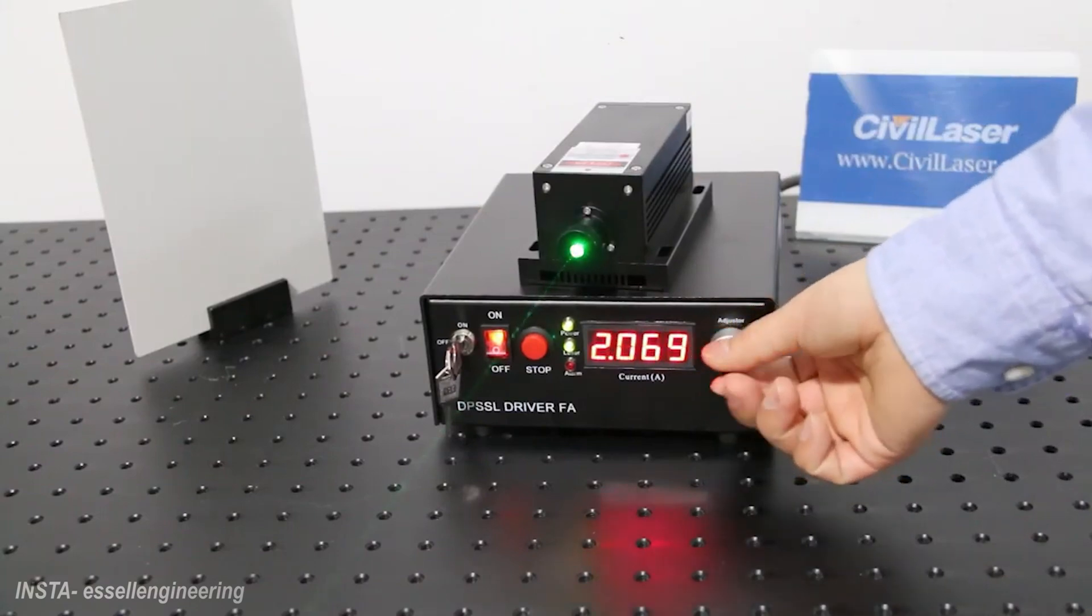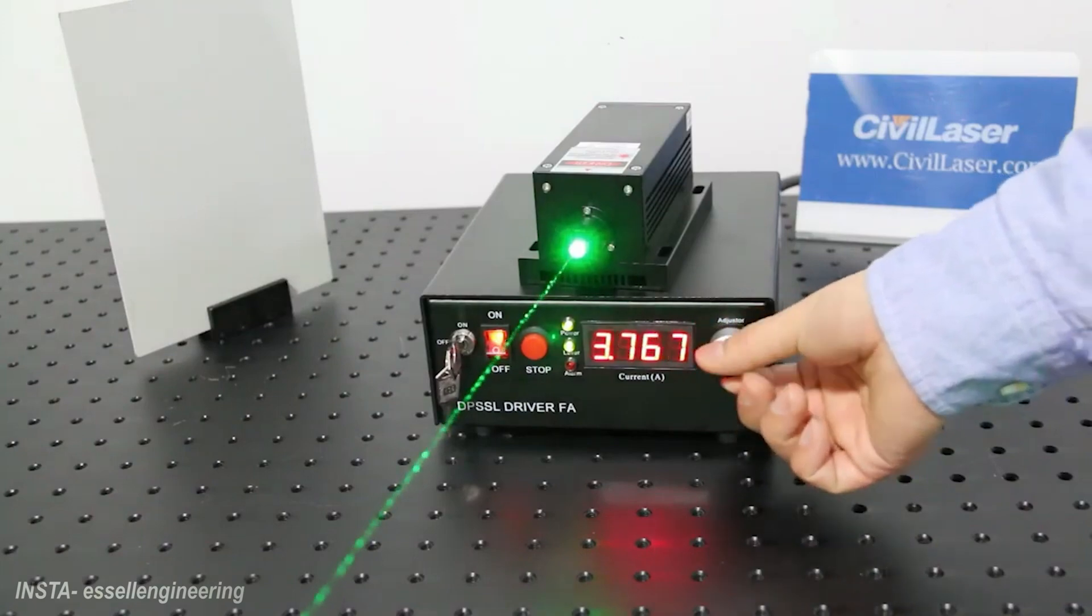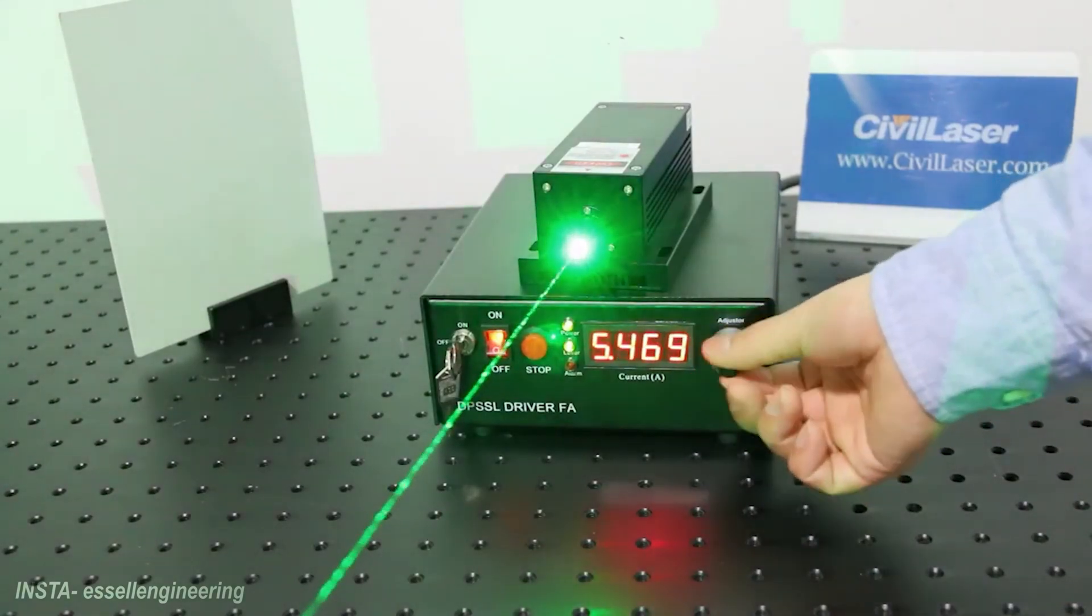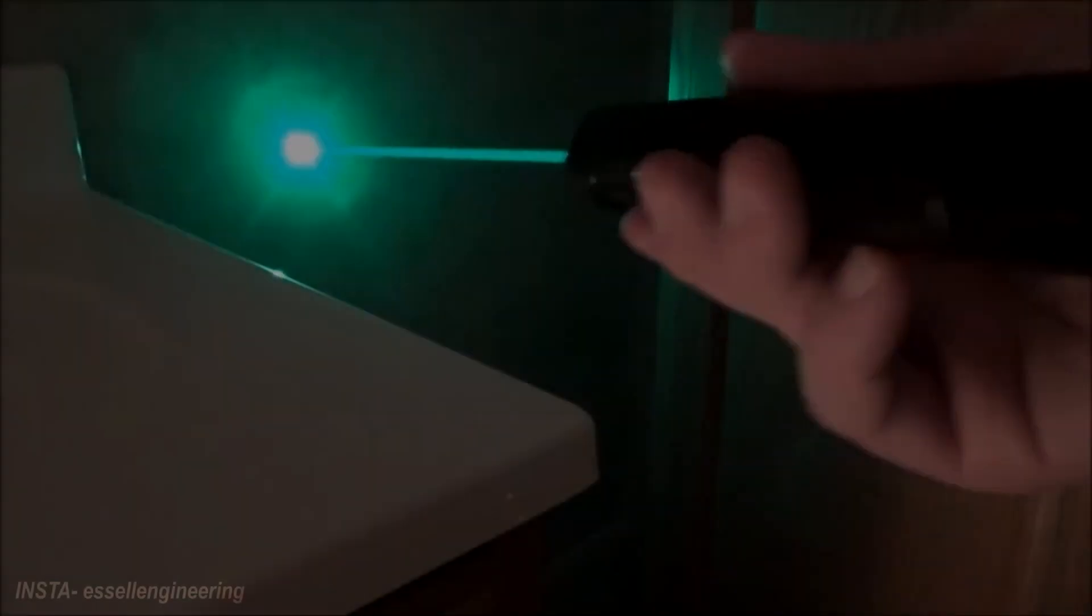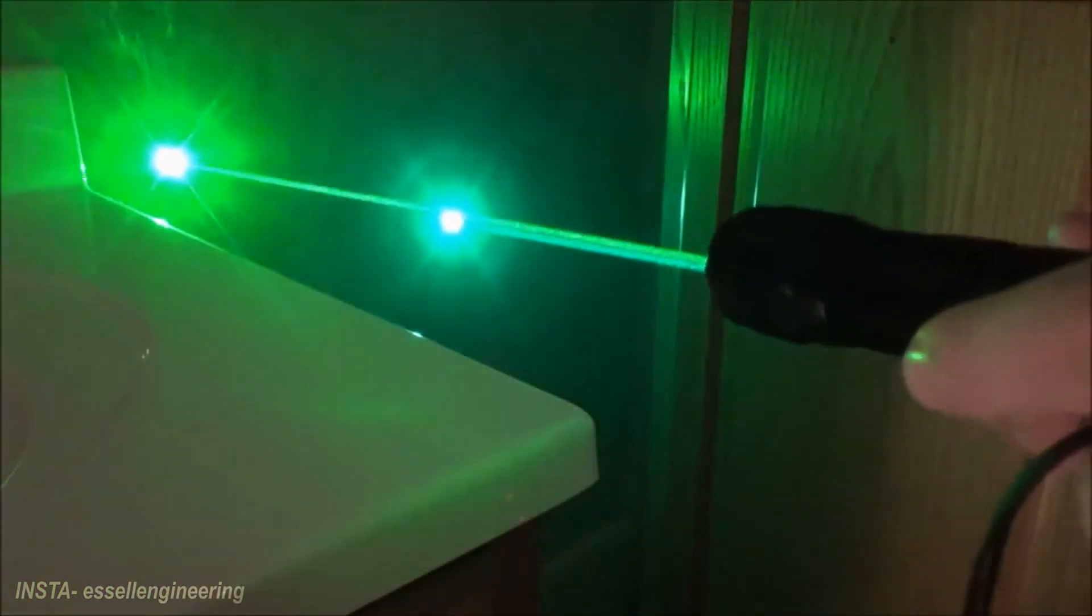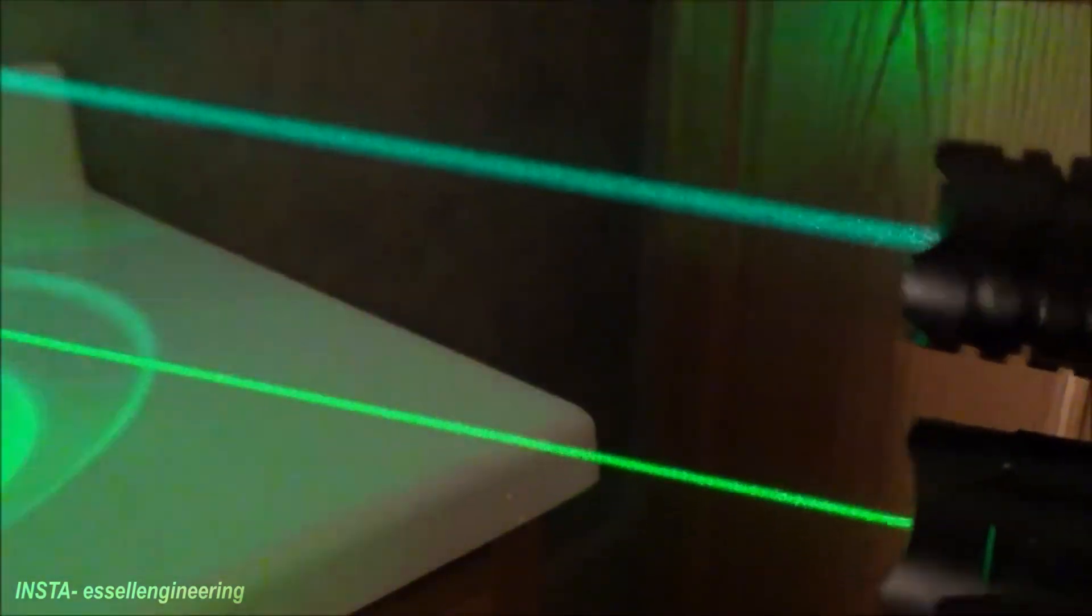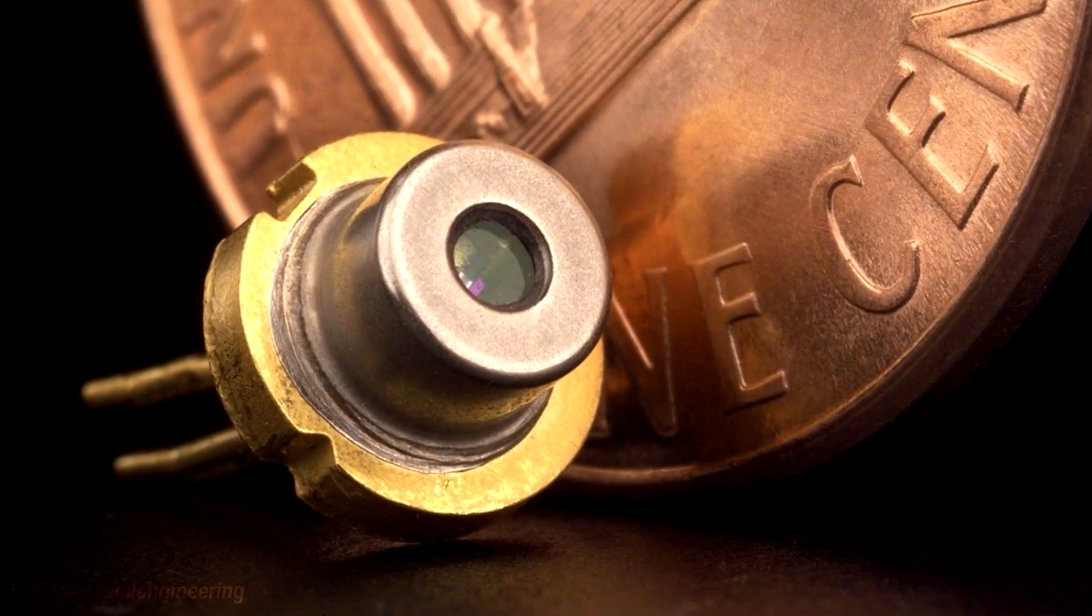Now come to our second laser and that is solid-state laser. A solid-state laser is a laser that uses solid as a laser medium. In these lasers, glass or crystalline materials are used. Ions are introduced as impurities into host material. The process of adding impurities to the substance is called doping.